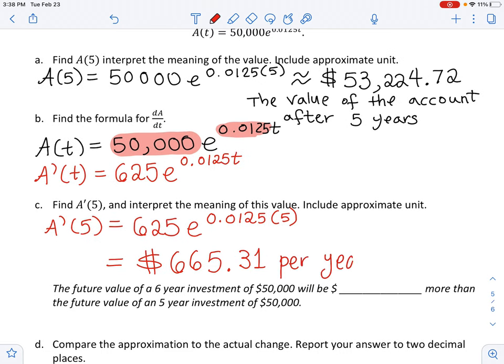Make sure we put the appropriate unit. So what does that mean? The future value of a 6-year investment going from 5th year to 6th year will be $665.31 more than the future value of a 5-year investment. That's how much, I'm sorry, I think I said the wrong thing earlier. It's not how fast it is growing. It is how much it is increasing by.